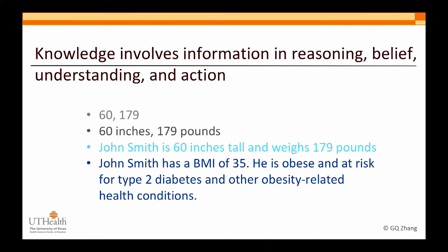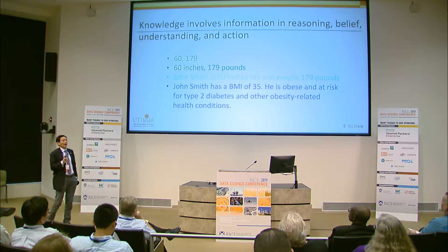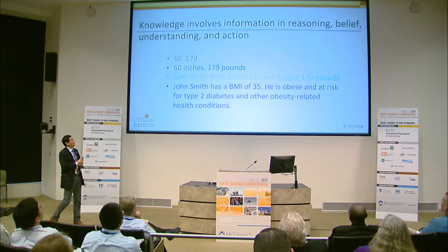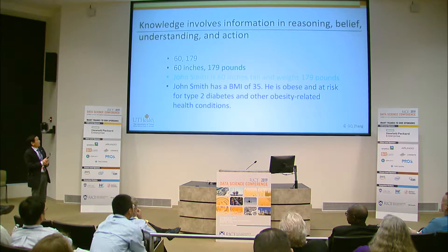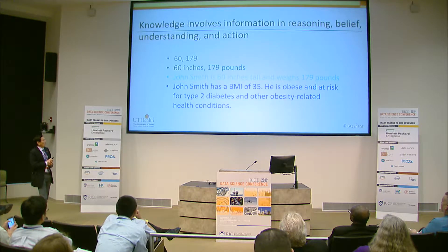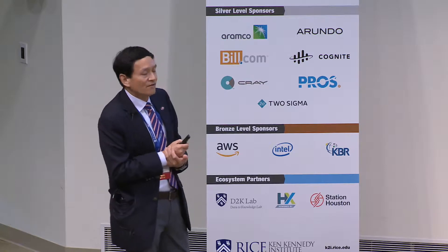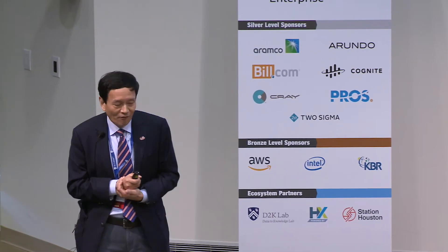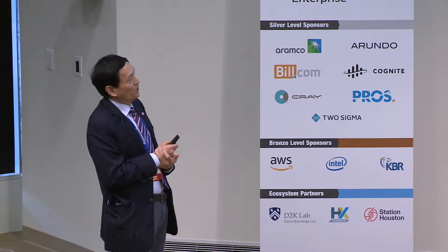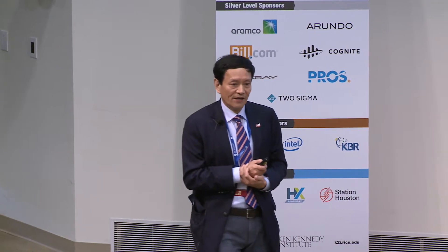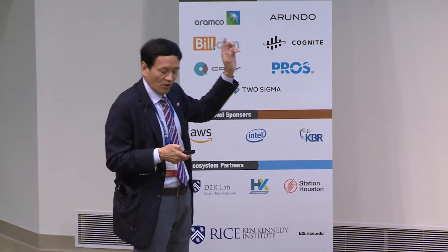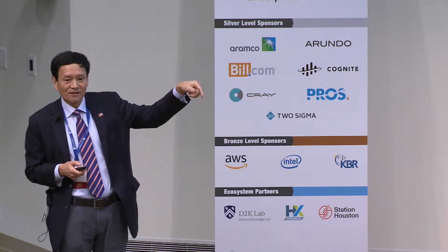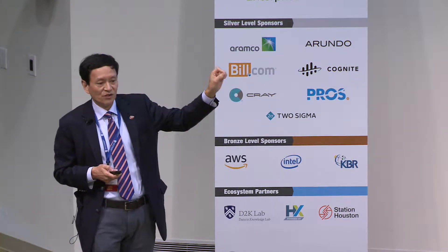Moving forward to the conceptual scale: what is knowledge? There's no simple way to define it, but pragmatically, knowledge involves information, reasoning, belief, understanding, and action. If we know John Smith is 60 inches and 179 pounds, we can calculate his BMI is 35. A BMI of 35 is quite obese according to healthcare standards, putting him at risk of type 2 diabetes and other obesity-related conditions. This is the progression from data to information to knowledge.